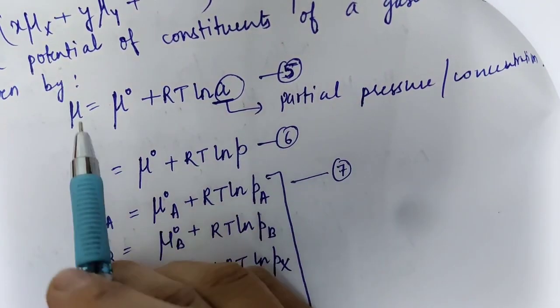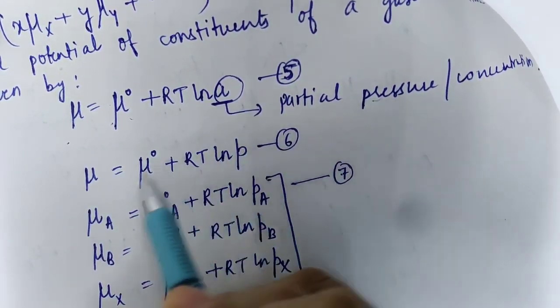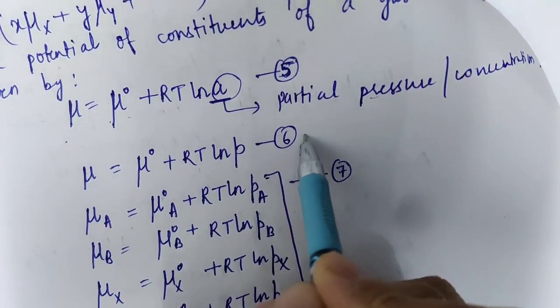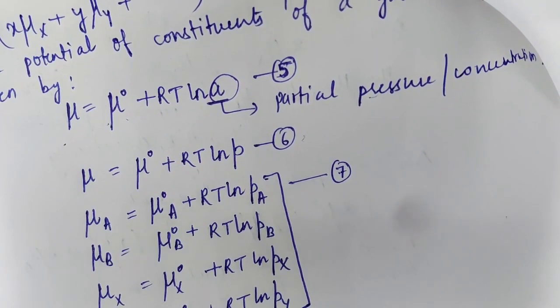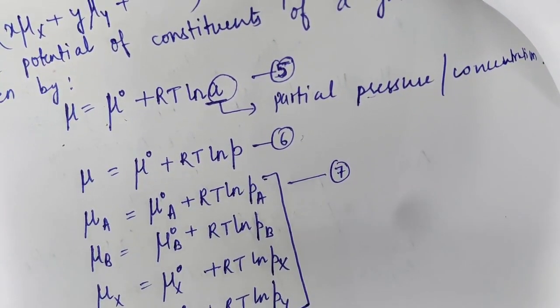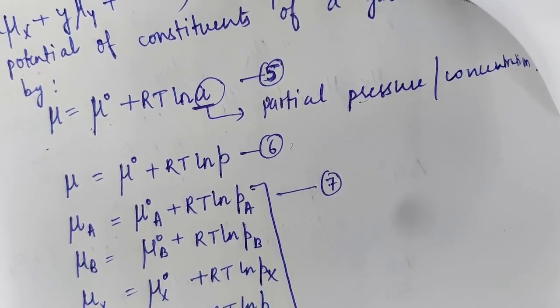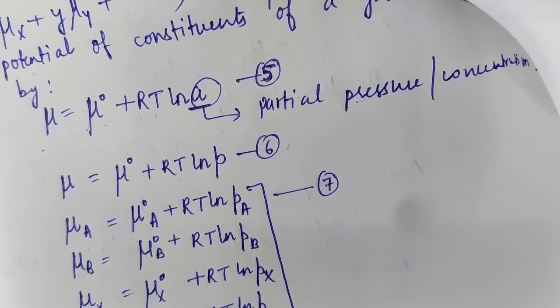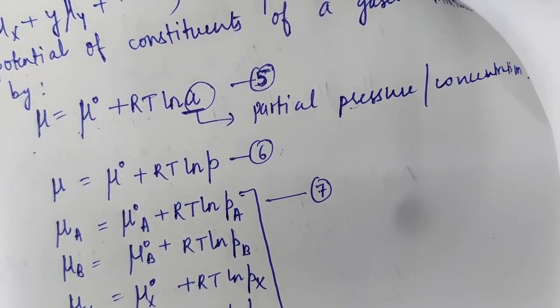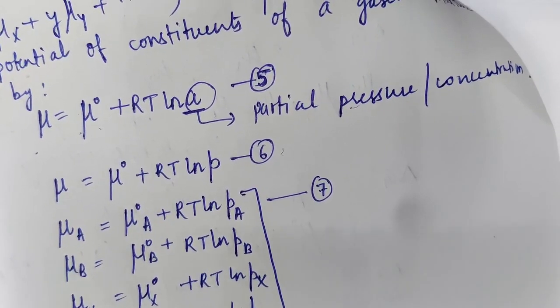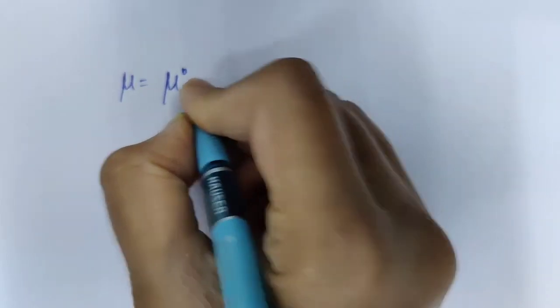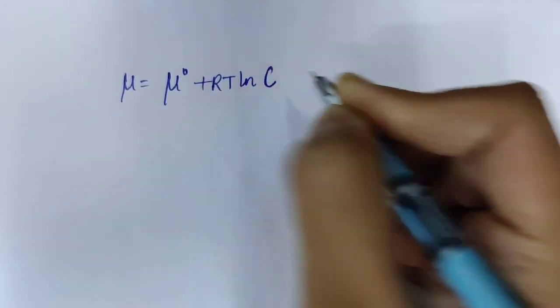If we take chemical potential in terms of concentration instead of partial pressure, the derivation gives us Kc. Writing chemical potential as mu equals standard chemical potential plus RT ln(C), where C is concentration. Individually: mu A equals mu°A plus RT ln CA; mu B equals mu°B plus RT ln CB; mu X equals mu°X plus RT ln CX; mu Y equals mu°Y plus RT ln CY. Let's call this equation 14.